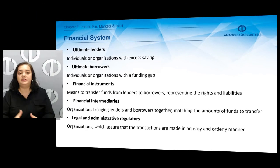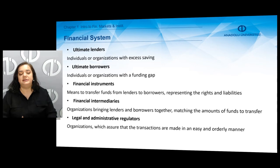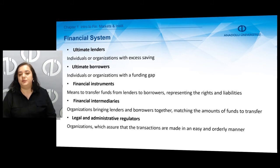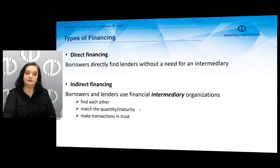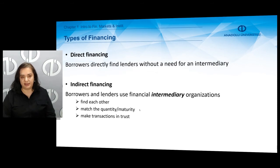On the other hand, there are ultimate borrowers with a funding gap. In order to finance the funding gap, borrowers need to come together with lenders. There is a flow of funds through financial instruments, which are means to transfer funds from lenders to borrowers and represent the rights and liabilities of these actors. Financial intermediaries are organizations bringing lenders and borrowers together, enabling matching of the amounts of funds transferred. Legal and administrative regulators assure that transactions are made in an easy and orderly manner.